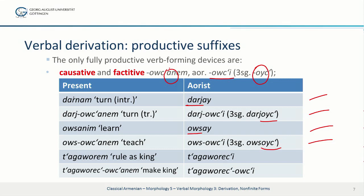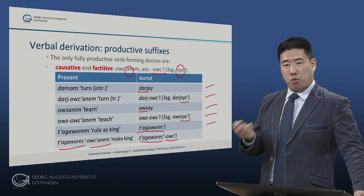Finally, showing how these suffixes can combine: a denominative such as tagaworem 'I rule as king,' aorist tagawretzi, with third singular tagaworyatzi. Here we have tagaworets as the aorist stem, so from that we form tagaworetsutsanem, meaning 'to make king, make someone rule as king.' The aorist is tagaworetsuci, with third singular tagaworetsuts, meaning 'I made someone king, I made someone rule as king.'